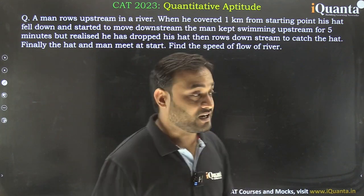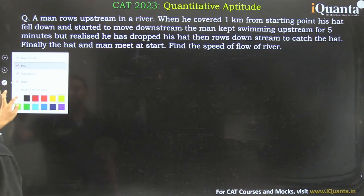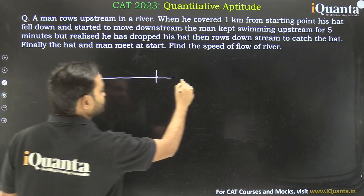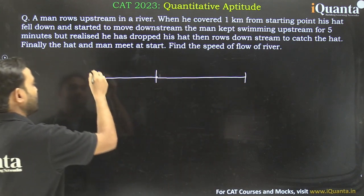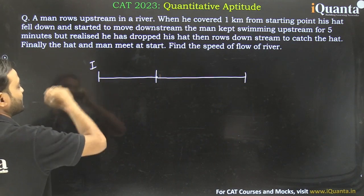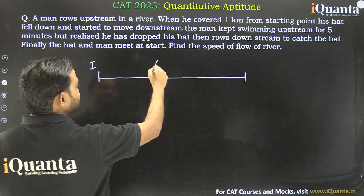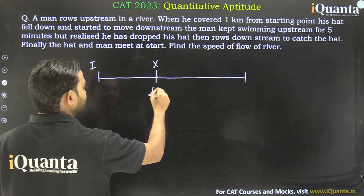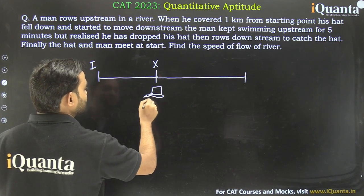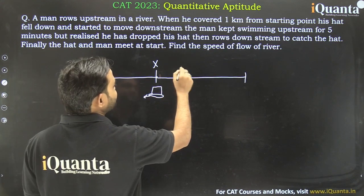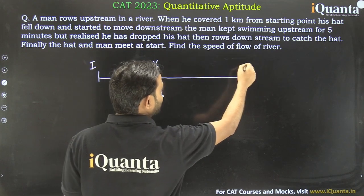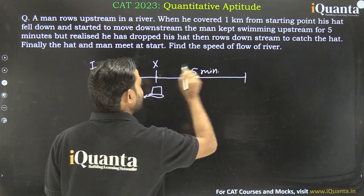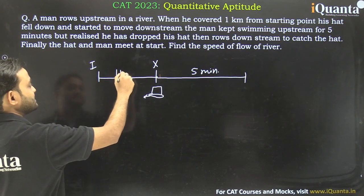Not much information is given in this question, so let us try to understand it first. There are 3 points in this question. One point is the initial point. The second point, let us say point X, is where he dropped his hat. The hat started flowing downstream from there. The man kept going upstream, and till point X he had taken 5 minutes. This distance is 1 km.